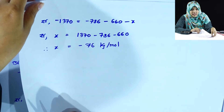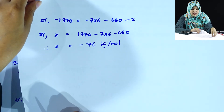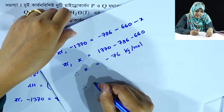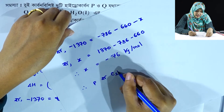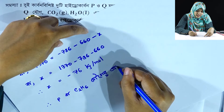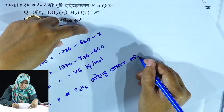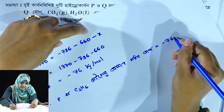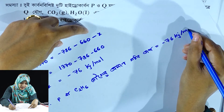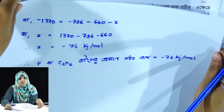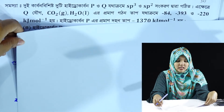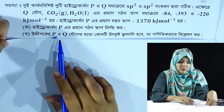x is equal to minus 76 kJ per mol. Number 6 sum: x is equal to...